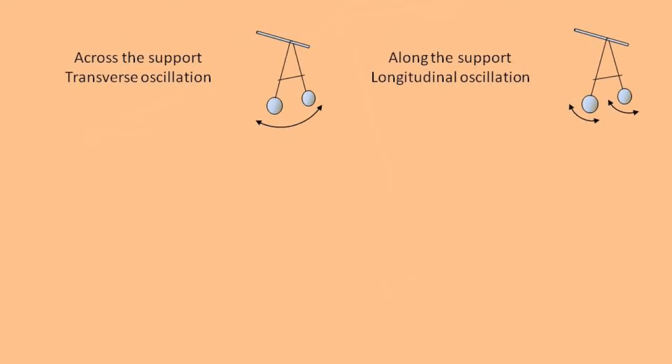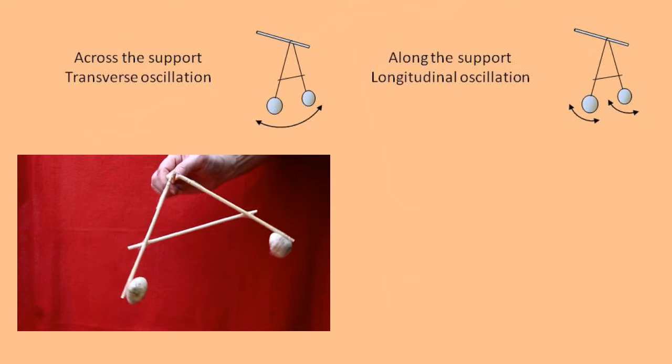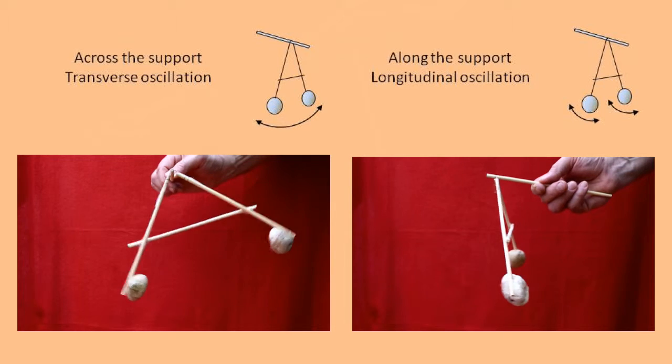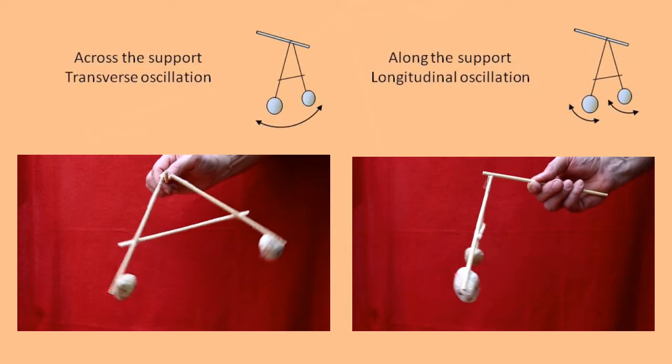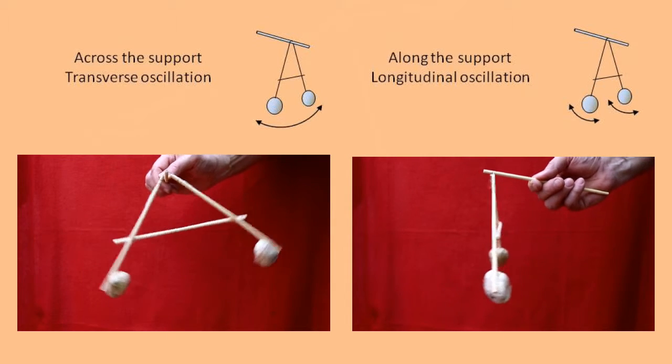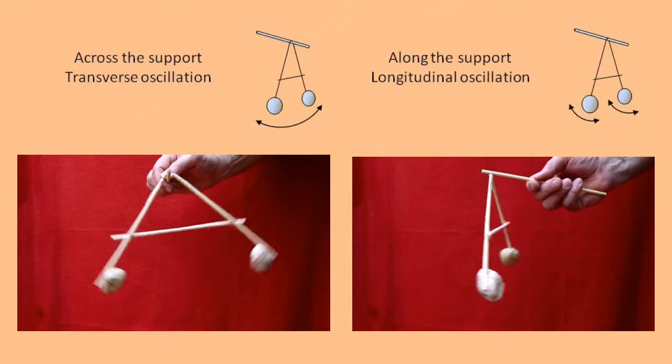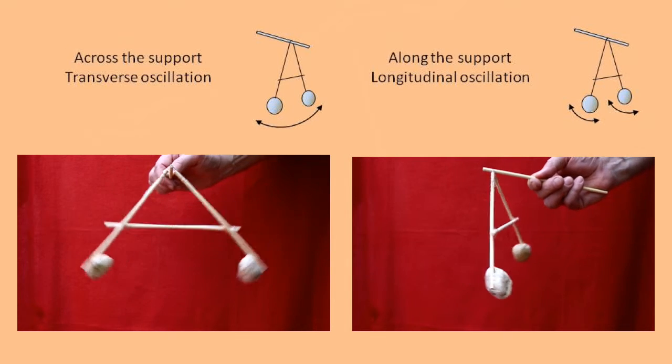There are two ways that this pendulum can swing, across the supporting chopstick or along it. We will calculate in this activity why the periods for the transverse and longitudinal directions are different.